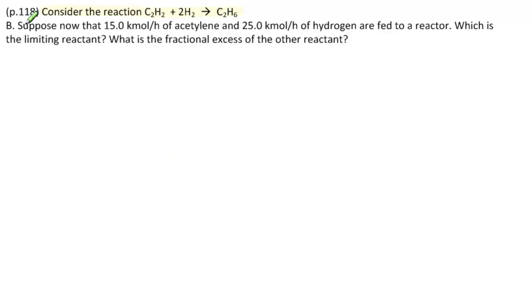Part B. Suppose now that 15 kilomoles per hour of acetylene and 25 kilomoles per hour of hydrogen are fed into the reactor. Again, we're to find the limiting reactant and the fractional excess of the other reactant. So what is our solution?